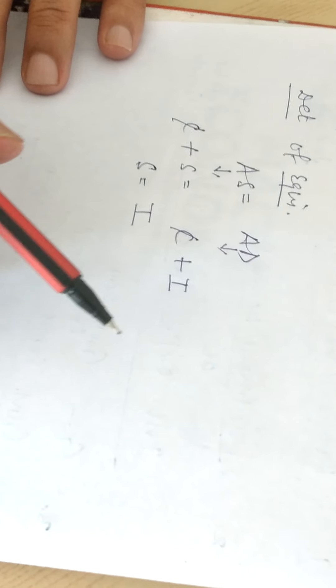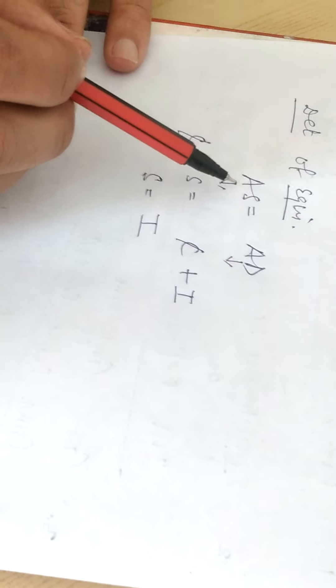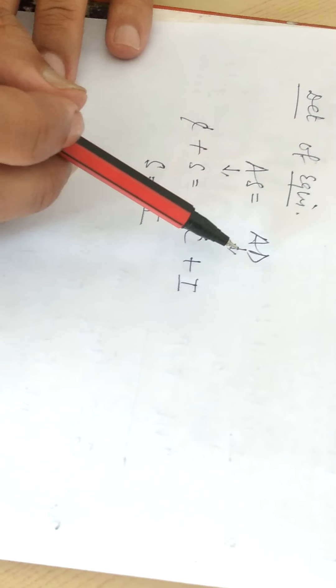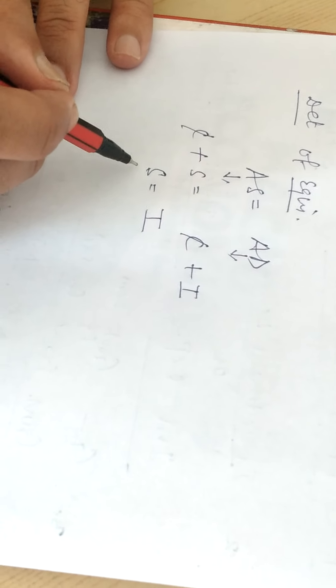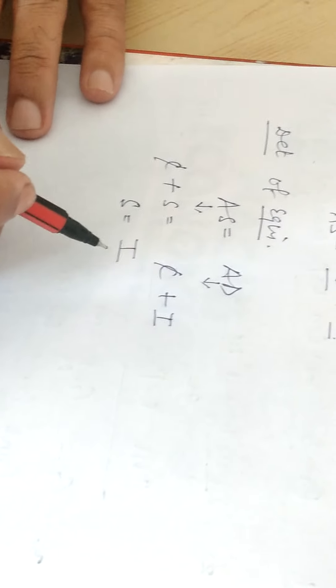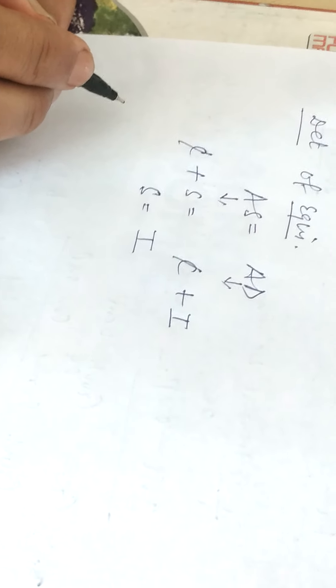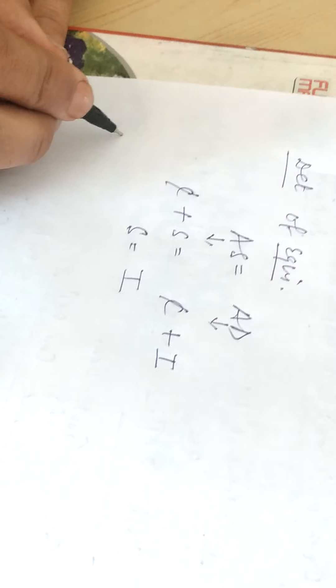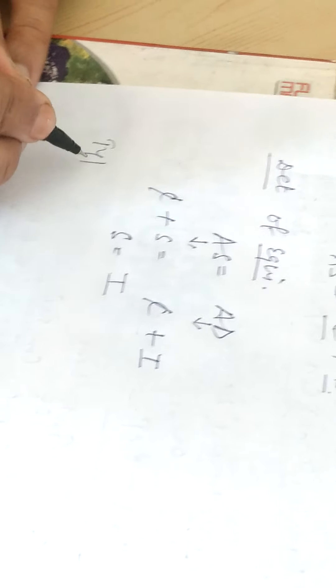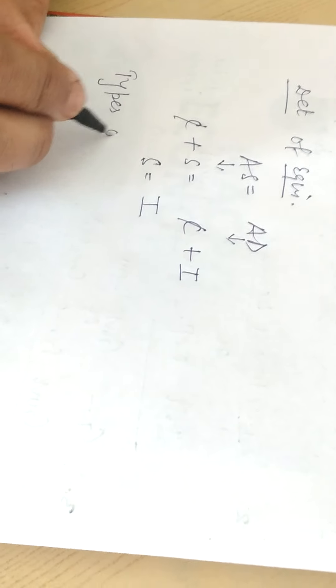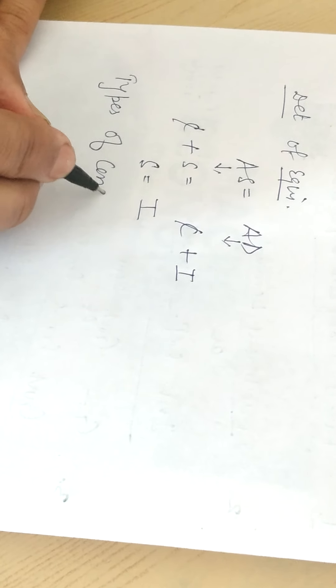It means in an economy the equilibrium condition is either aggregate supply equal to aggregate demand, and saving must be equal to the investment. Now as I am talking about the consumption, pattern of consumption, consumption behavior, now I am talking about the types of consumption.